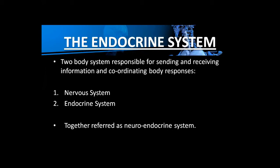When the two systems work together, we call that system the neuroendocrine system. The endocrine system is the system relating to the glands. But whenever nerve cells are included inside the endocrine system, we call that system the neuroendocrine system.